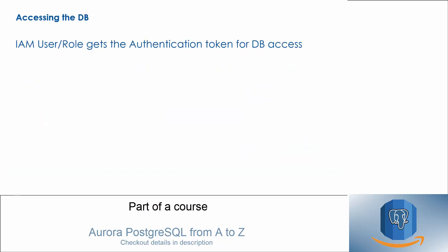The IAM user or role with an appropriate policy can generate an authentication token. This token may be thought of as a password, but unlike a password, the token is not static — it changes with every call. A token is valid for 15 minutes, meaning it is usable for 15 minutes to create a connection to the database. Once the token expires, use of the token will lead to a failure of authentication.